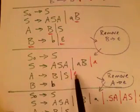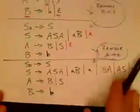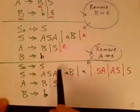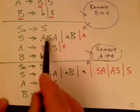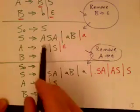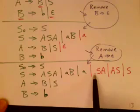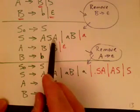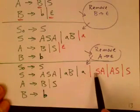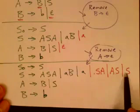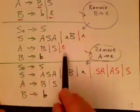Now we're left with A goes to epsilon, so we must remove that rule too. A appears in the rule S goes to ASA, so we replace it with all combinations: ASA (both A's present), SA (first A gone to epsilon), AS (second A gone to epsilon), and S (both A's gone to epsilon). We add these three new rules for the S goes to ASA rule and eliminate A goes to epsilon.